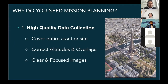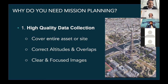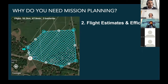Third — last but not least — you want to make sure your images are clear and focused, essentially devoid of any motion blur. Because even if you've got the entire asset covered and you've got the right altitudes and GSD, you don't want to come back to the office and realize some of the images were not clear or focused and you can't actually use them to process the data. That's how we define high quality data — the top three things in our mind.